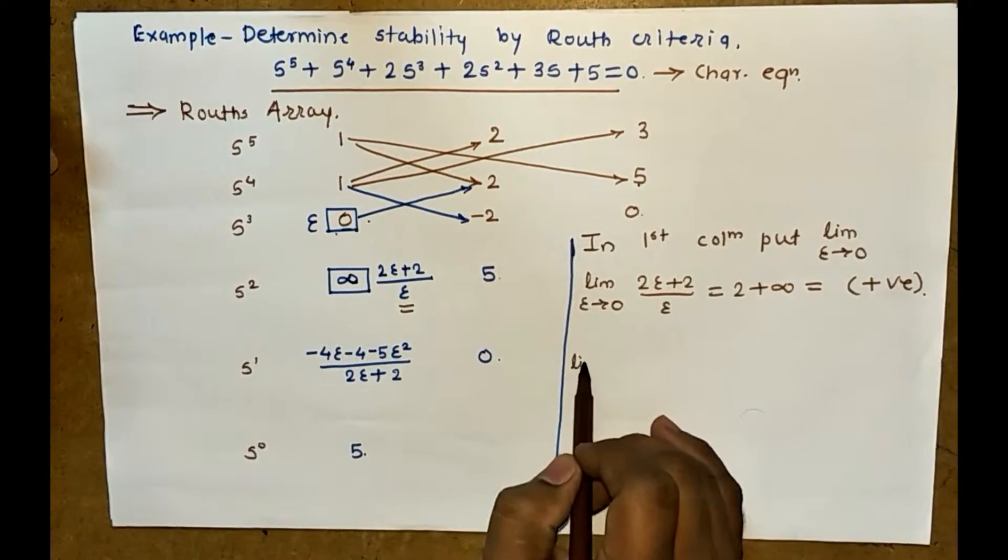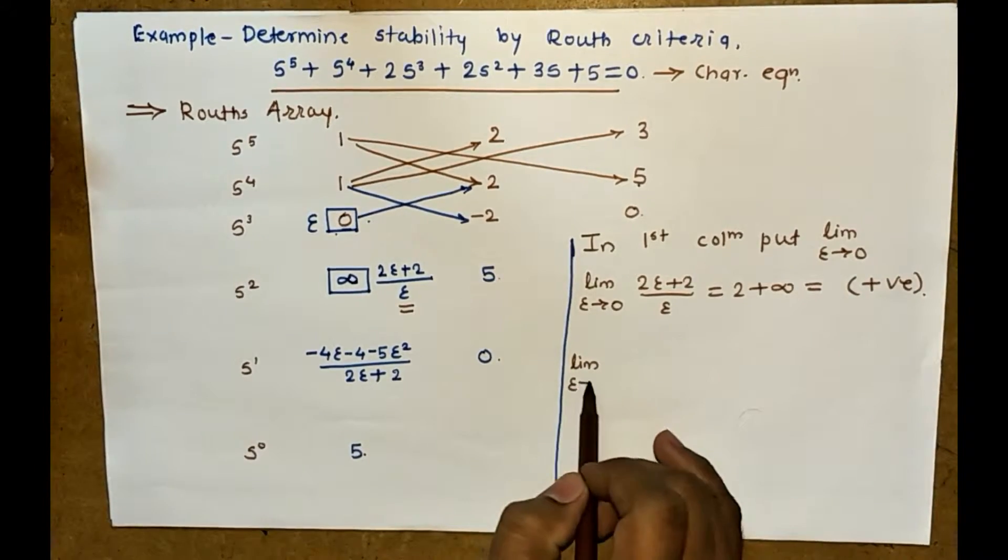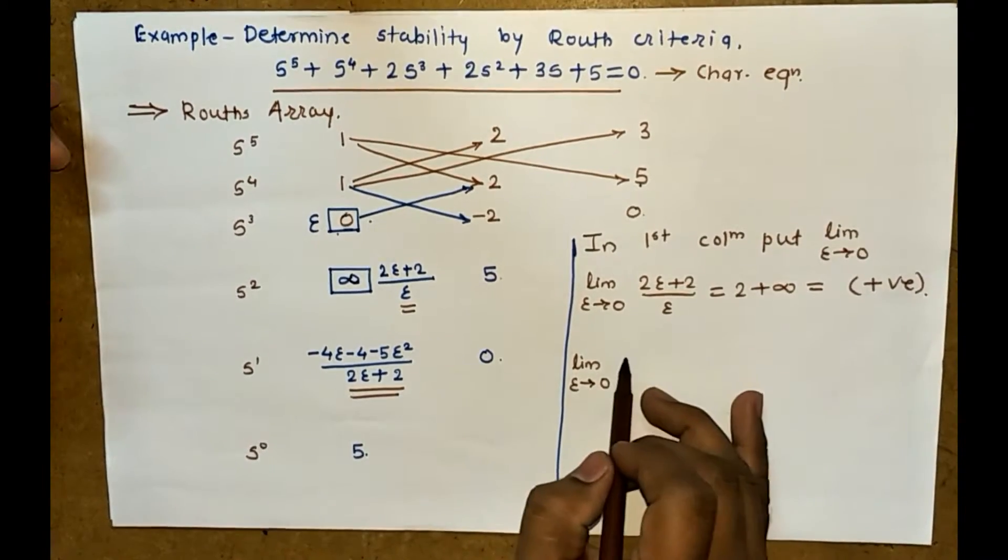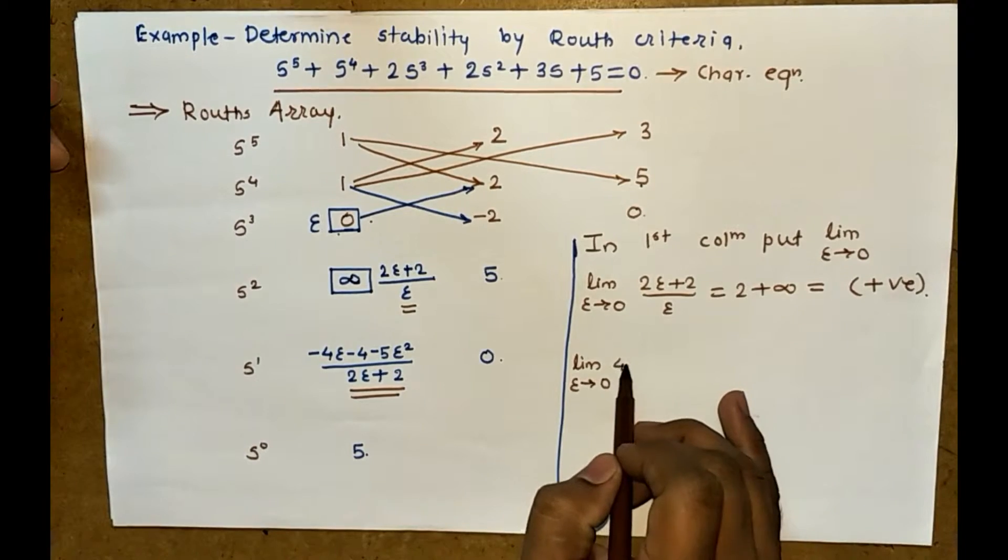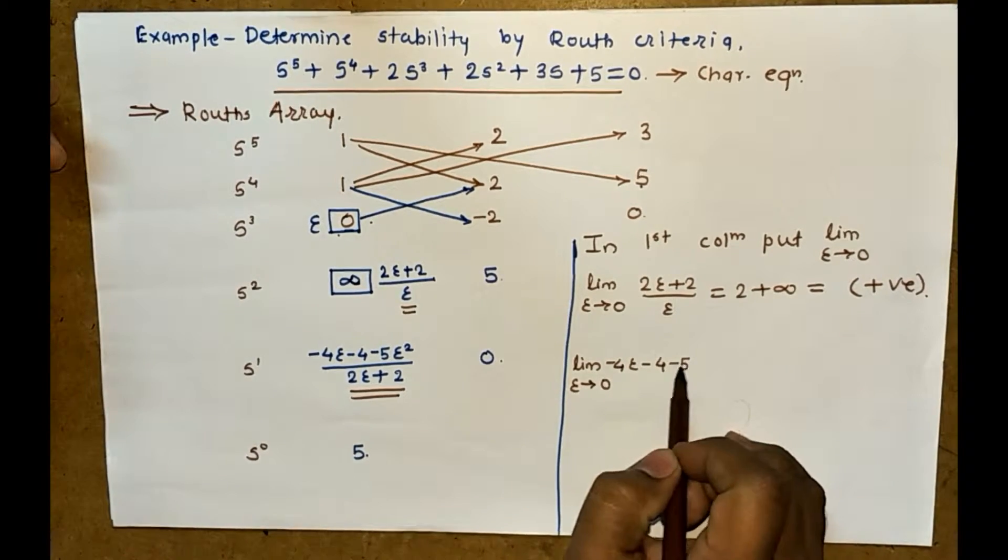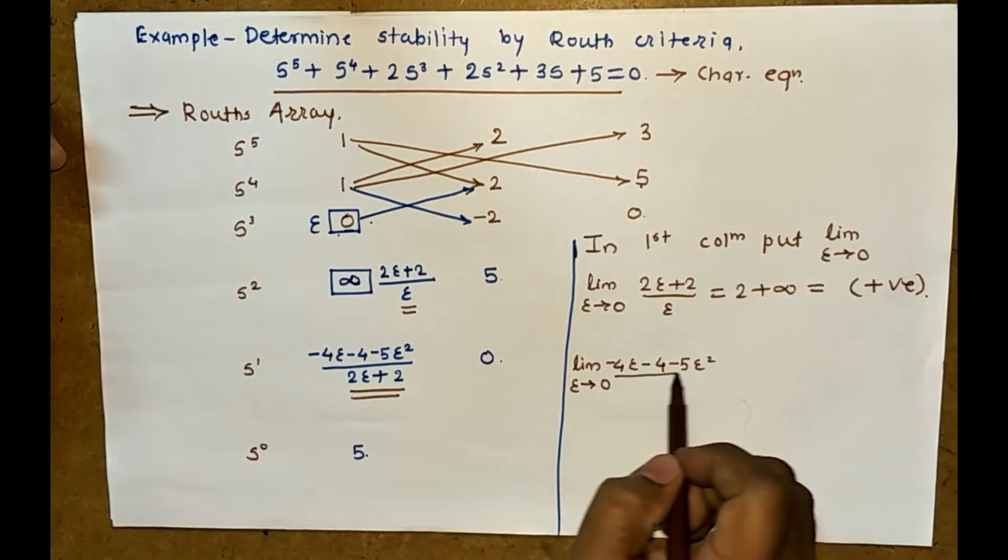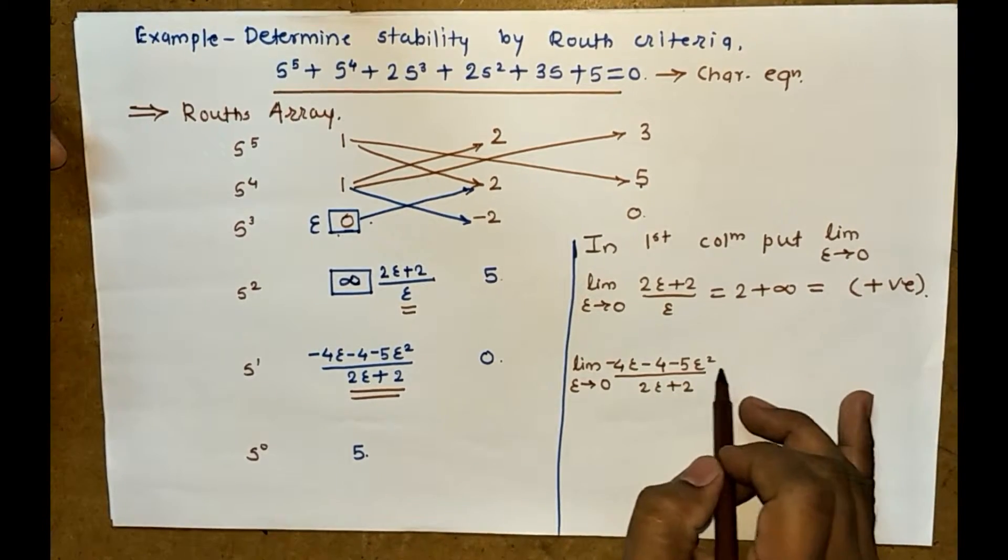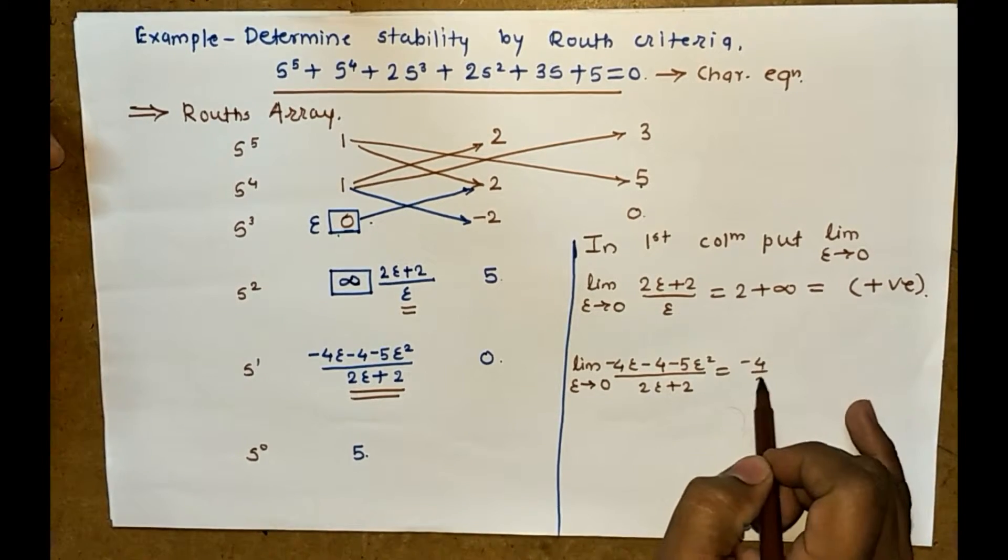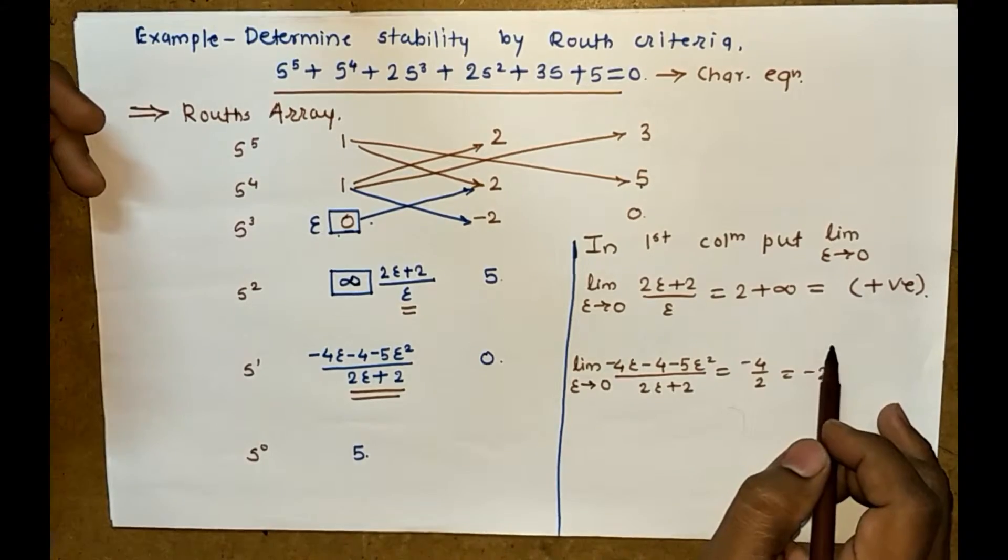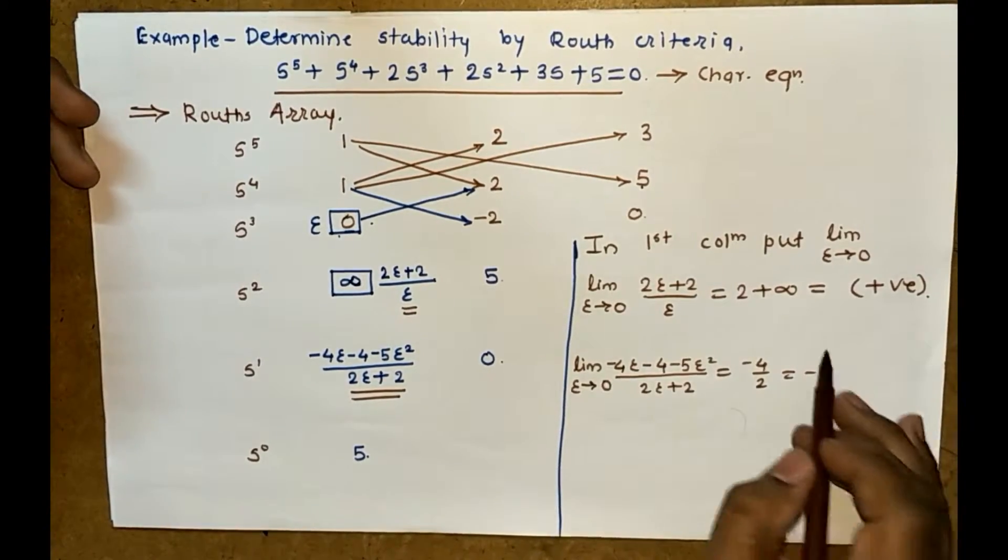Now the next term, limit epsilon tends to 0. For this term, if you substitute the limit, you get minus 4 by 2, that is minus 2.